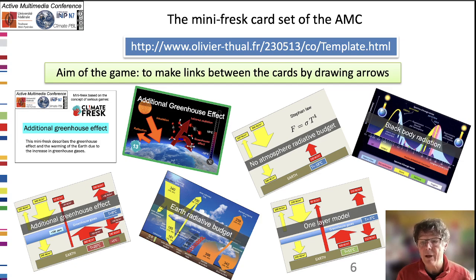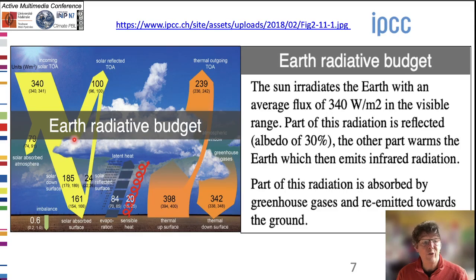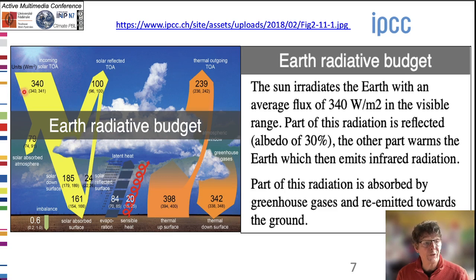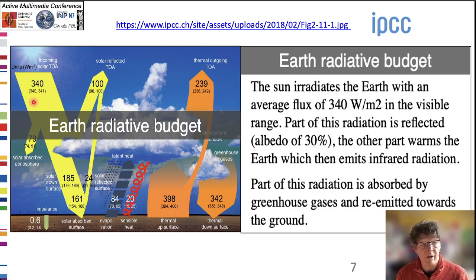The aim of this game is to link the cards in a narrative chain. The first card of this mini fresque is called Earth's Radiative Budget. Its back explains that the Sun irradiates Earth with an average flux of 340 watts per square meter in the visible spectrum.